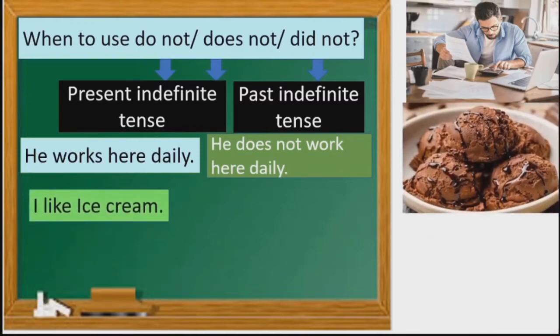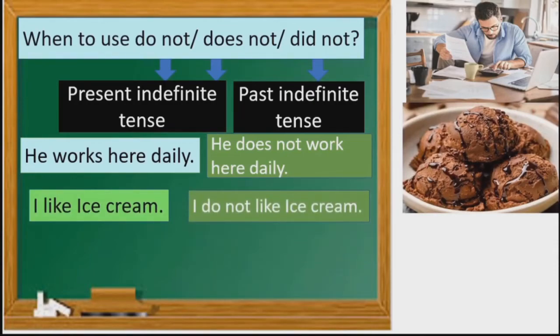Second example: 'I like ice cream' becomes 'I do not like ice cream.' Children, you can see this is also in present indefinite tense, so we use 'do not.'